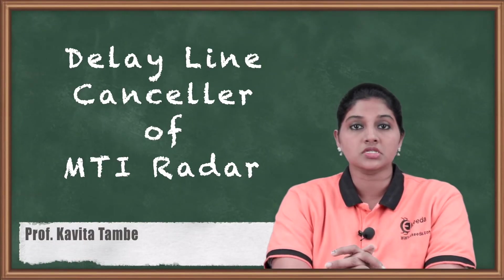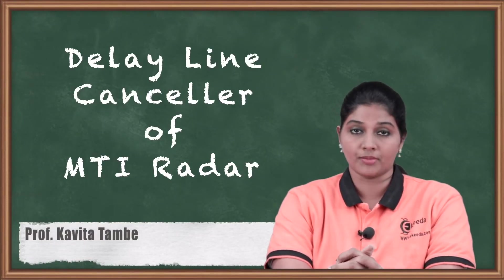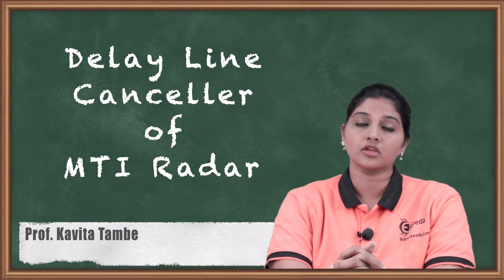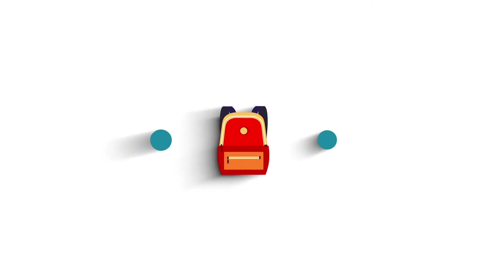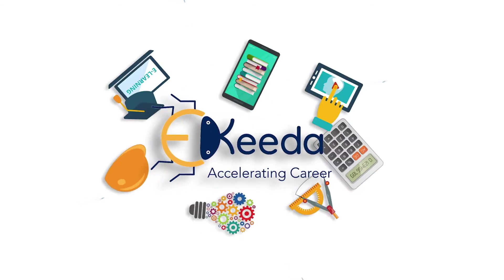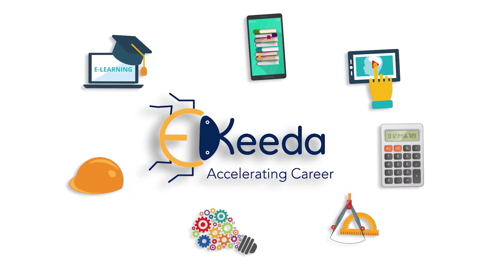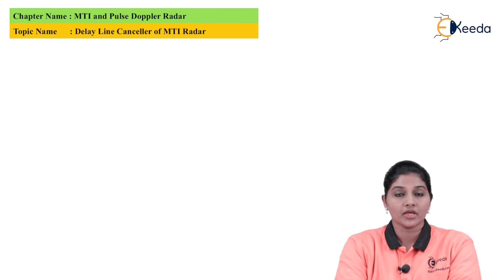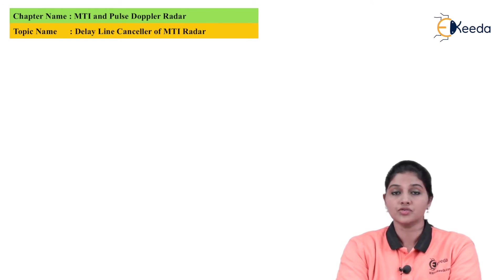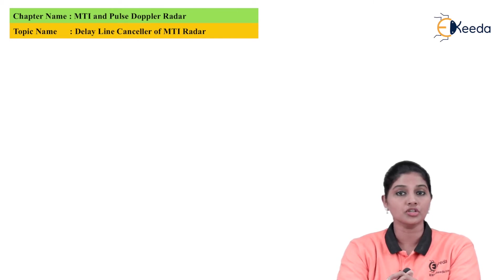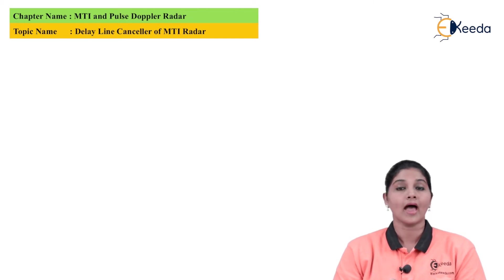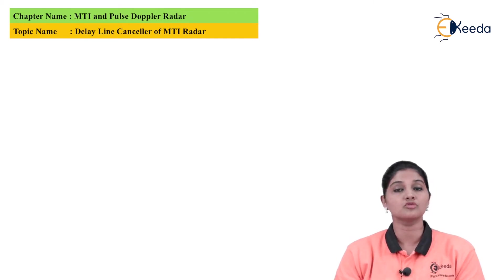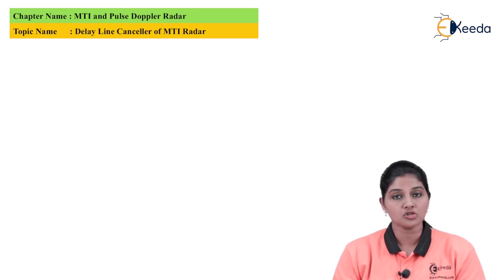In this video we are going to discuss the delay line canceler of MTI radar and derive the equation for the same. The MTI radar is basically a pulse radar that uses a low pulse repetition frequency. MTI radar has a unique feature to distinguish between the received echo signal and stationary clutter, enabling it to differentiate between moving objects and stationary objects.